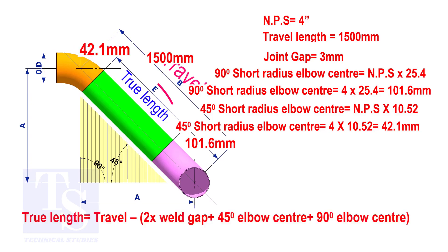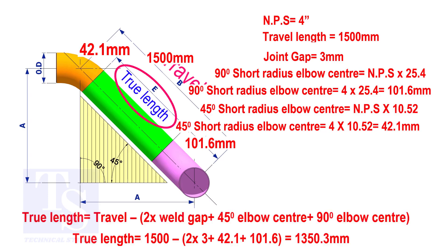To calculate the true length of the pipe, subtract two weld gaps plus both elbow centers from the travel length. The true length of the pipe is 1350.3 millimeters.